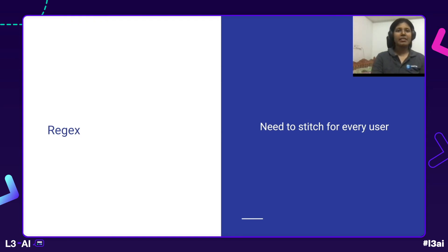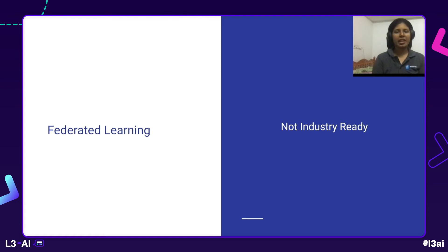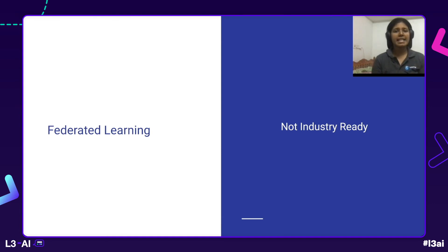The next thing we considered was federated learning, and this was top-notch. The moment I saw how federated learning works, I was sold — it's exactly what we were looking for. We need a distributed training methodology where one master takes care of training in clusters, and each node has the data segregation we need. Unfortunately, federated learning is not ready for production use — it's still in the research world. If you have experience successfully deploying it in production, I'd love to know, but as far as I've read, federated learning is the solution but not yet production-ready. That's the only reason we ruled it out.